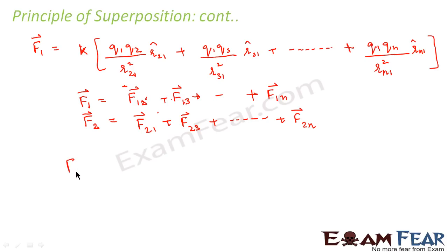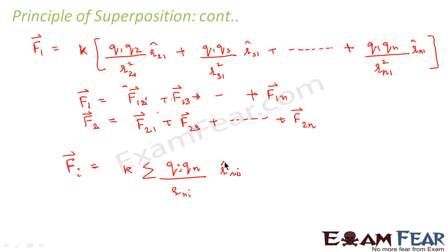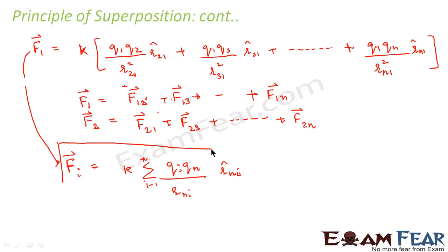Therefore, in general, we can say that the force on any i-th charge is equal to K times the summation of Qi·Qn divided by Rni² multiplied by the unit vector R̂ni, where i takes values from 1 to n. This is the concise general expression for the principle of superposition, and it defines the principle of superposition.